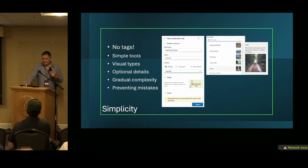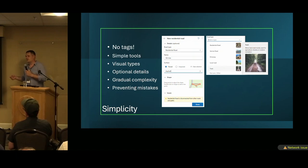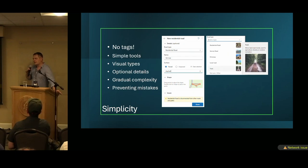The details we can add are optional and kind of blend in. So you can add a house, but you can also add the address — like street name, or if you know the street number, or the name of the building. But it's all optional, and we can handle the complexity of translating this into the OSM schema.